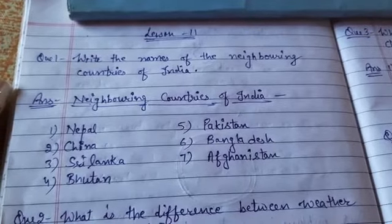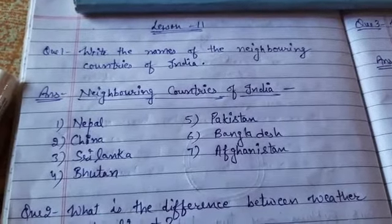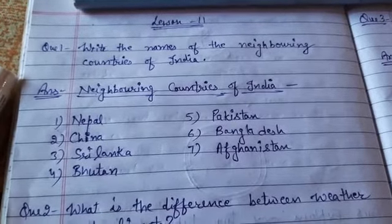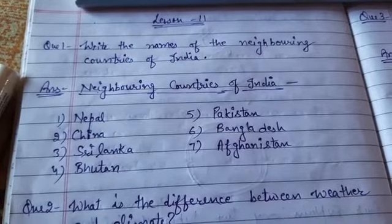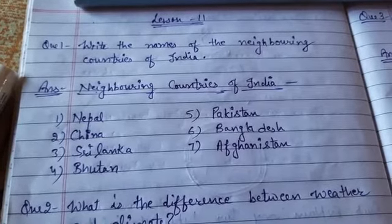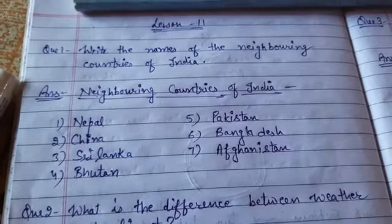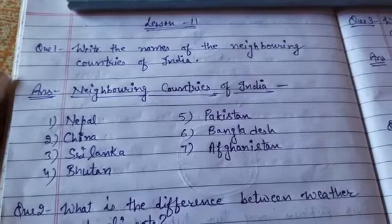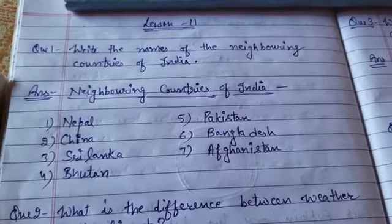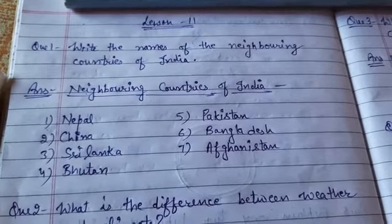Question number 1: write the names of neighboring countries of India. The countries whose boundaries touch the boundary of India are called neighboring countries.